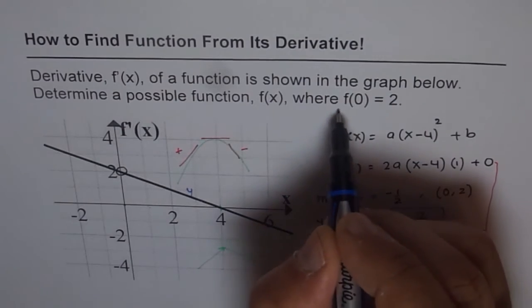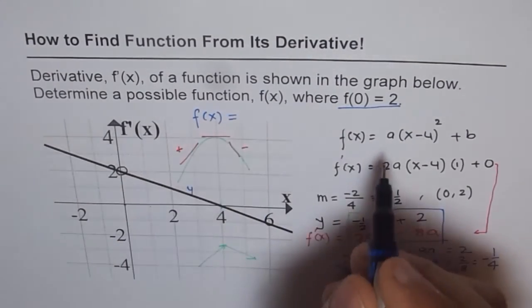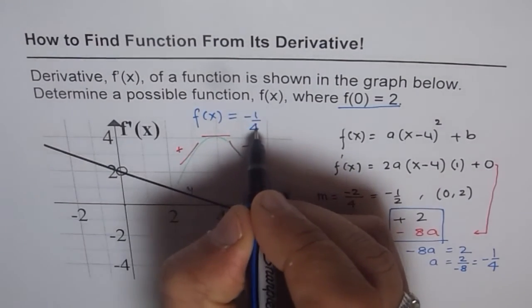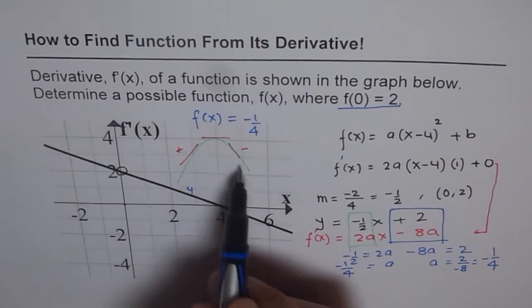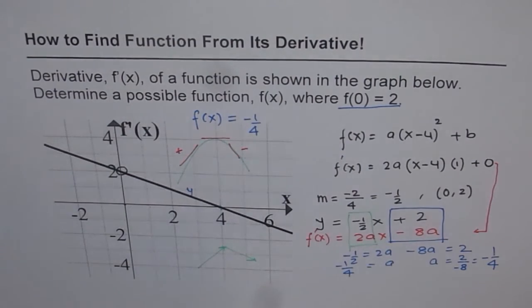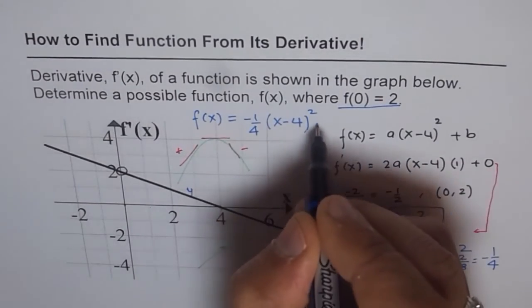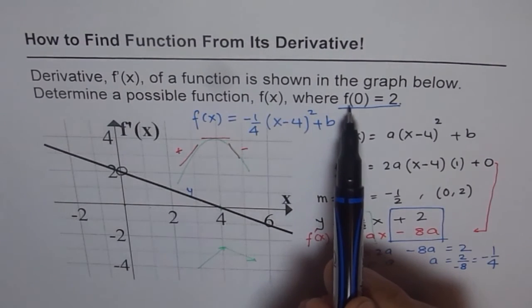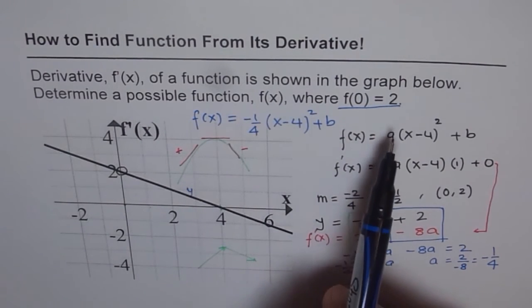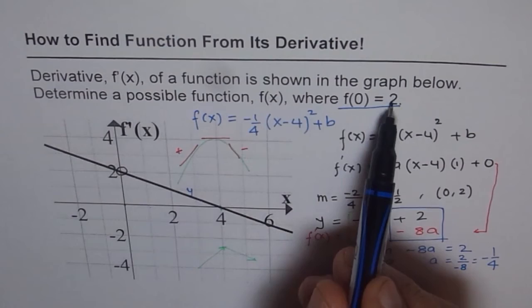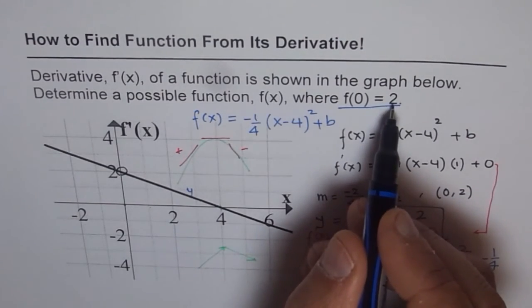To find b, we will use this value, f(0) equals 2. So our function now becomes f(x) equals to a is minus 1 over 4. Now minus 1 over 4 seems to be correct value. Since we need concave down, we need this parabola to open downwards. We should be expecting a as negative, so that part is perfect. And then the rest of the equation is (x - 4)² plus b. To find b, we can use this point. It says determine a possible function f(x) where f(0) equals 2. So we can put 0 for x and 2 for y to calculate b.